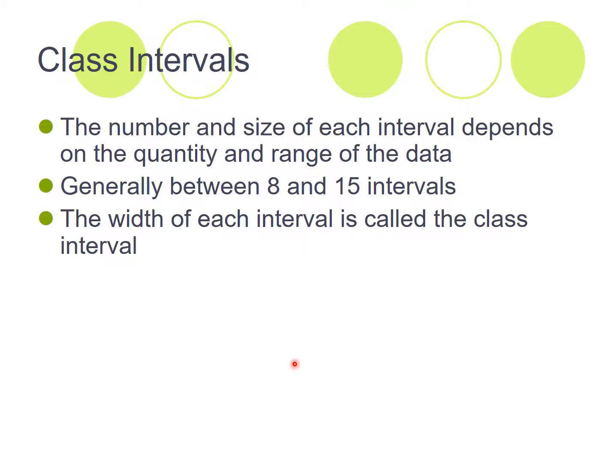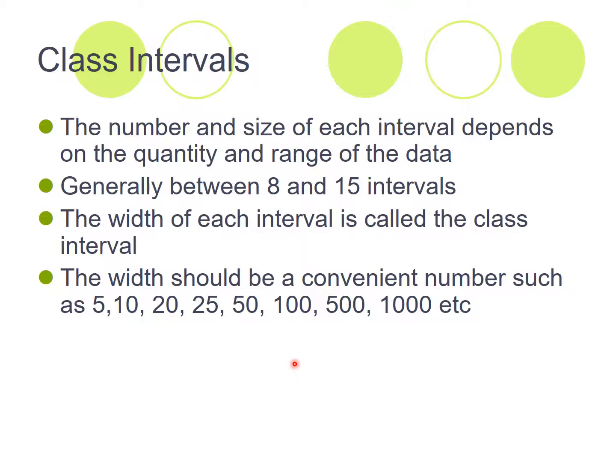The width of each interval is called the class interval. And the width should be a nice convenient or a nice round number. So for example, you don't want to have ages between 1 and 5 and a half, between 5 and a half and 11. That's just a strange number to go up in. So you want to go up in nice round numbers. So for example, you can go up in 5s or you can go up in 10s, 20s,